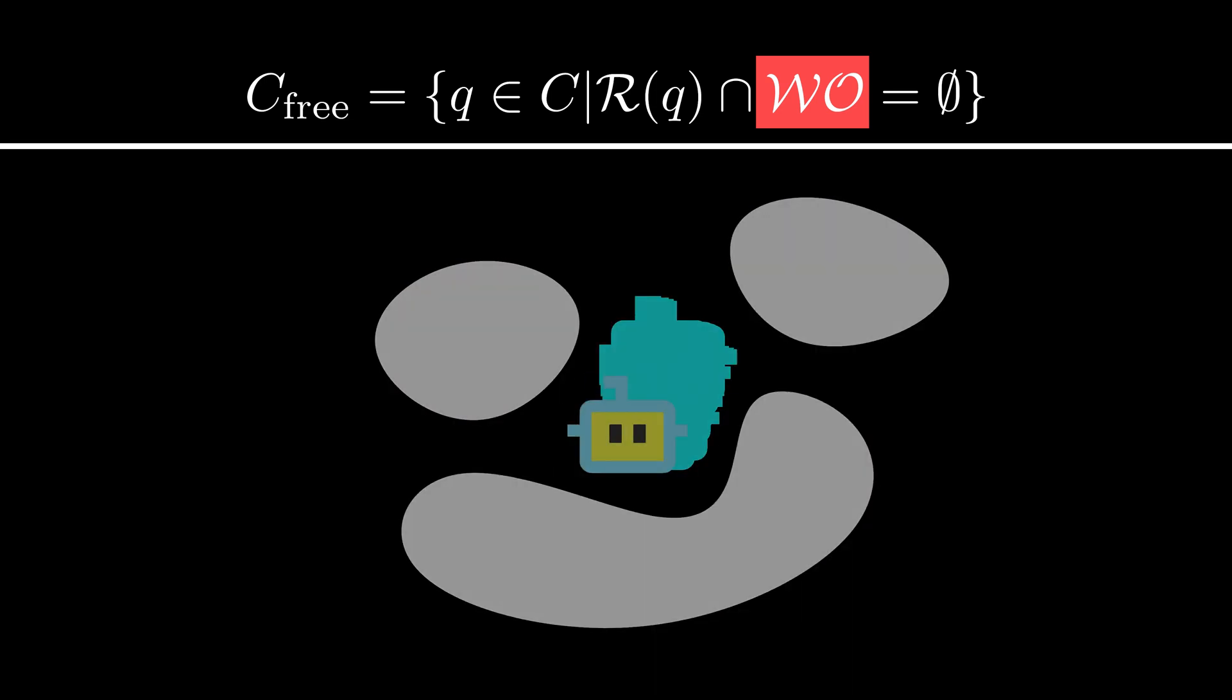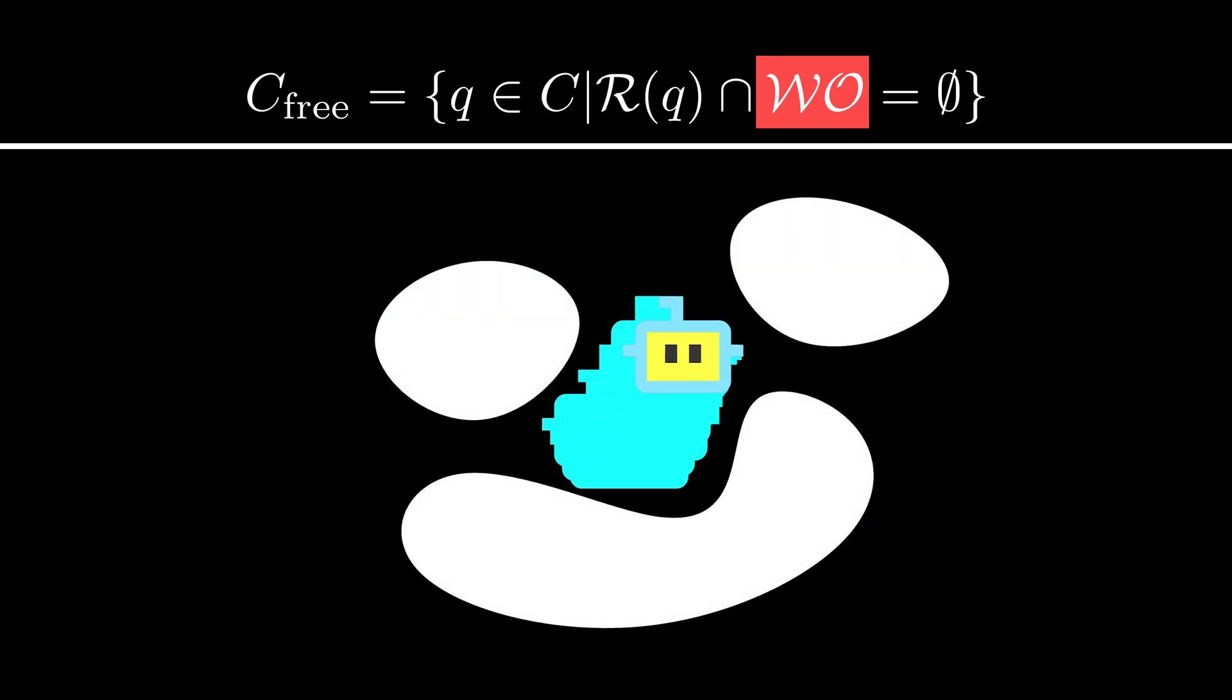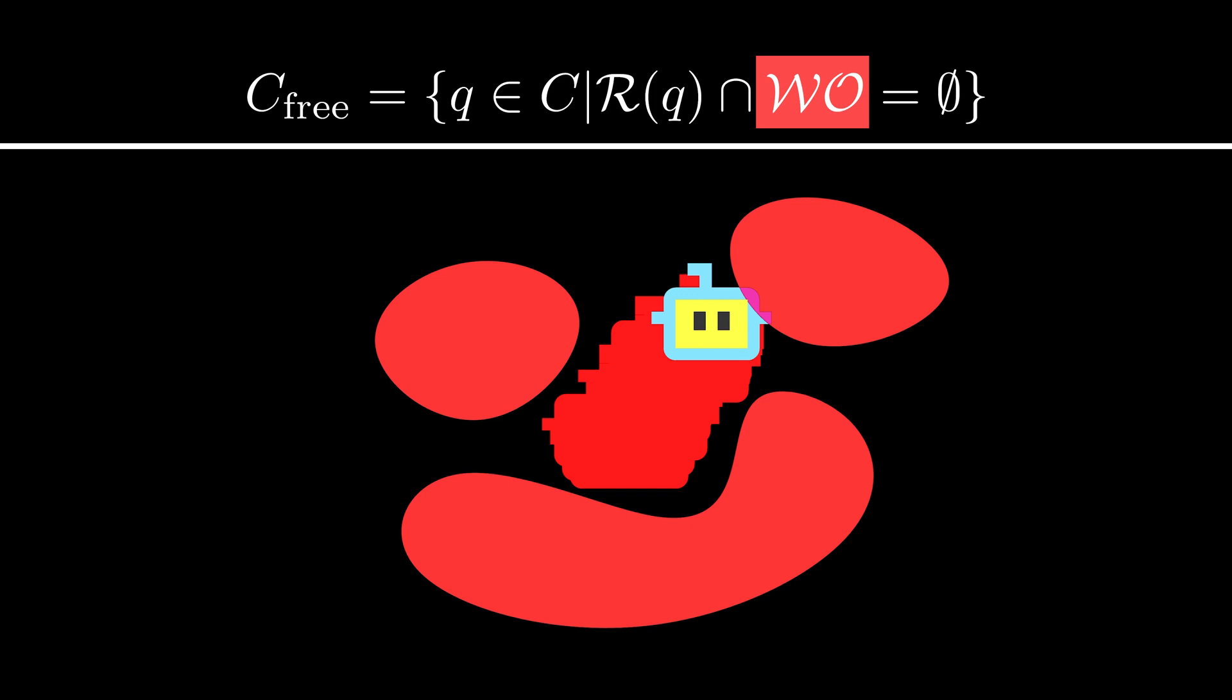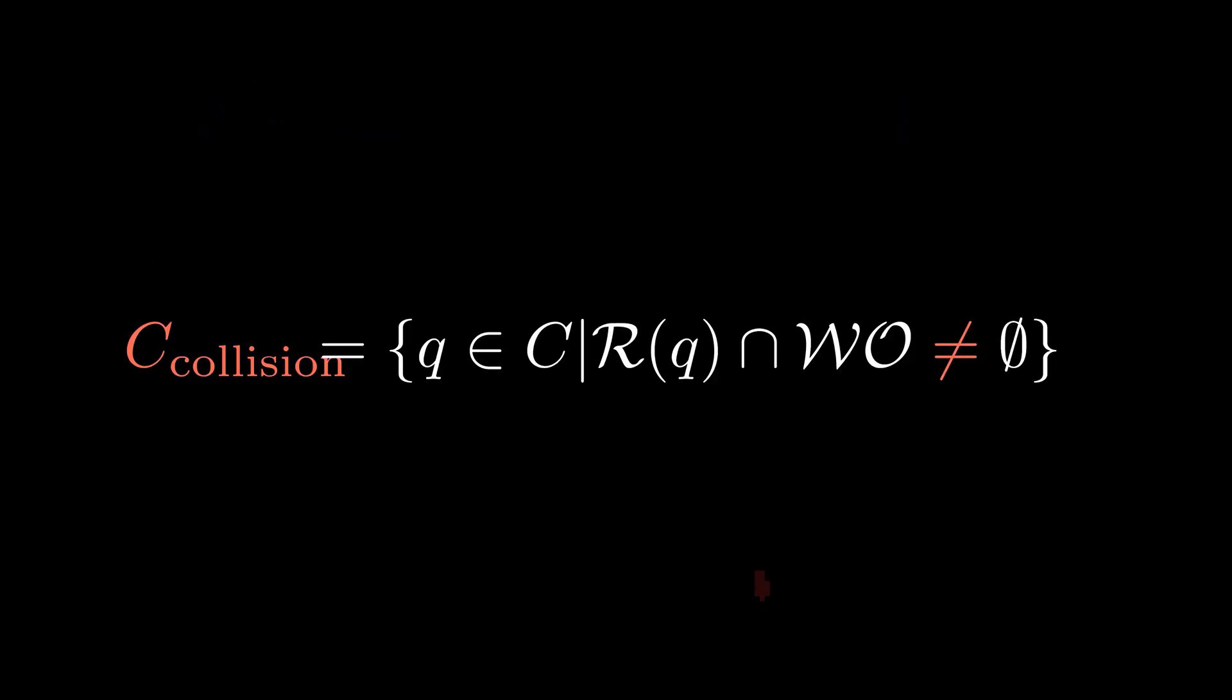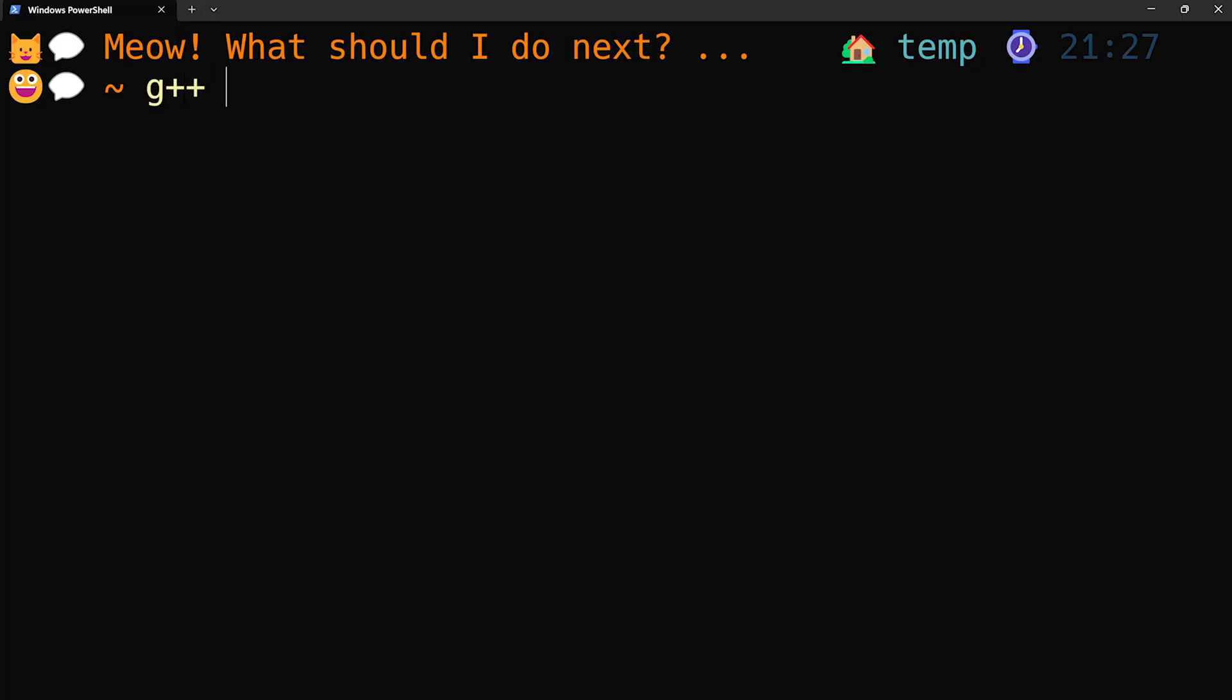As long as not hitting any obstacles. But if I hit something, the intersection of my robot space and the world obstacles are no longer an empty set. The collision occurs.